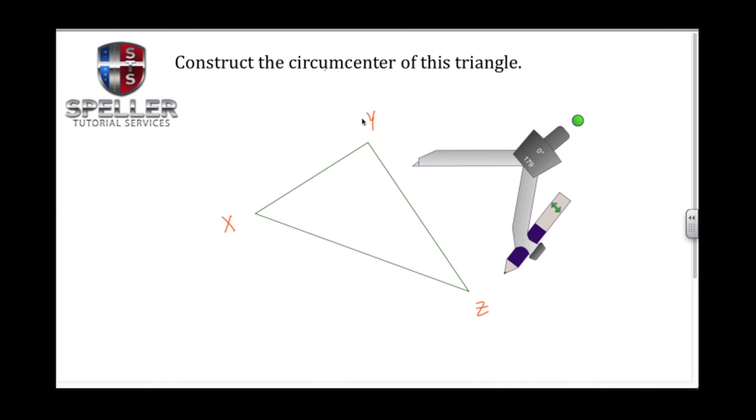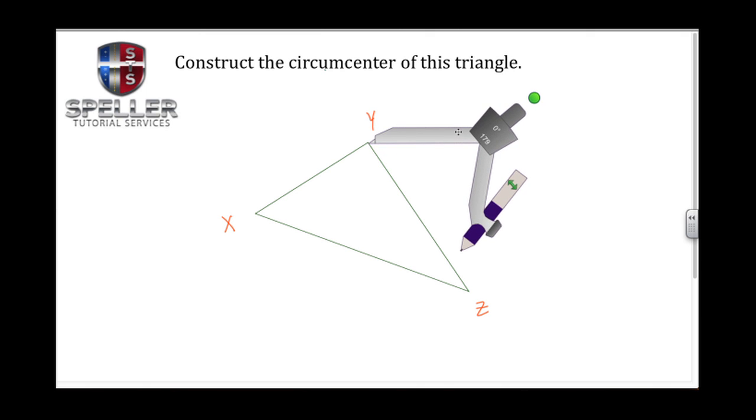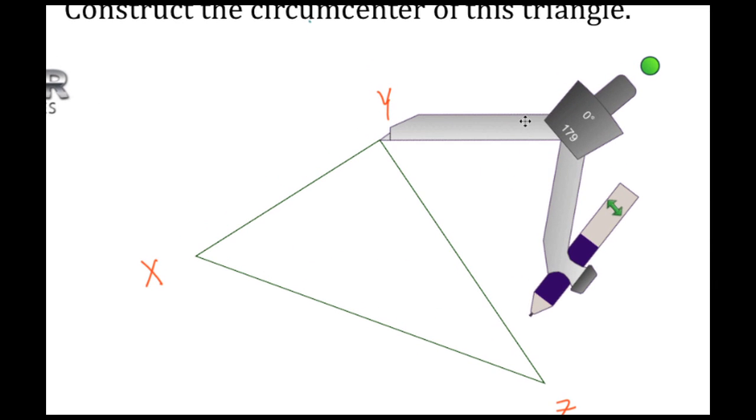Welcome back to Speller Tutorial Services. In today's video, we're going to construct the circumcenter of this triangle. We begin by taking the compass tool and making sure this radius is set arbitrarily at a length that's more than half the length of the segment that you are working with. In this case, I'm working with segment YZ.